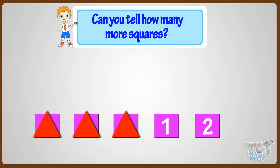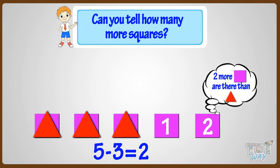So what do we get? Five minus three equals two. Two more squares are there than triangles. Good.